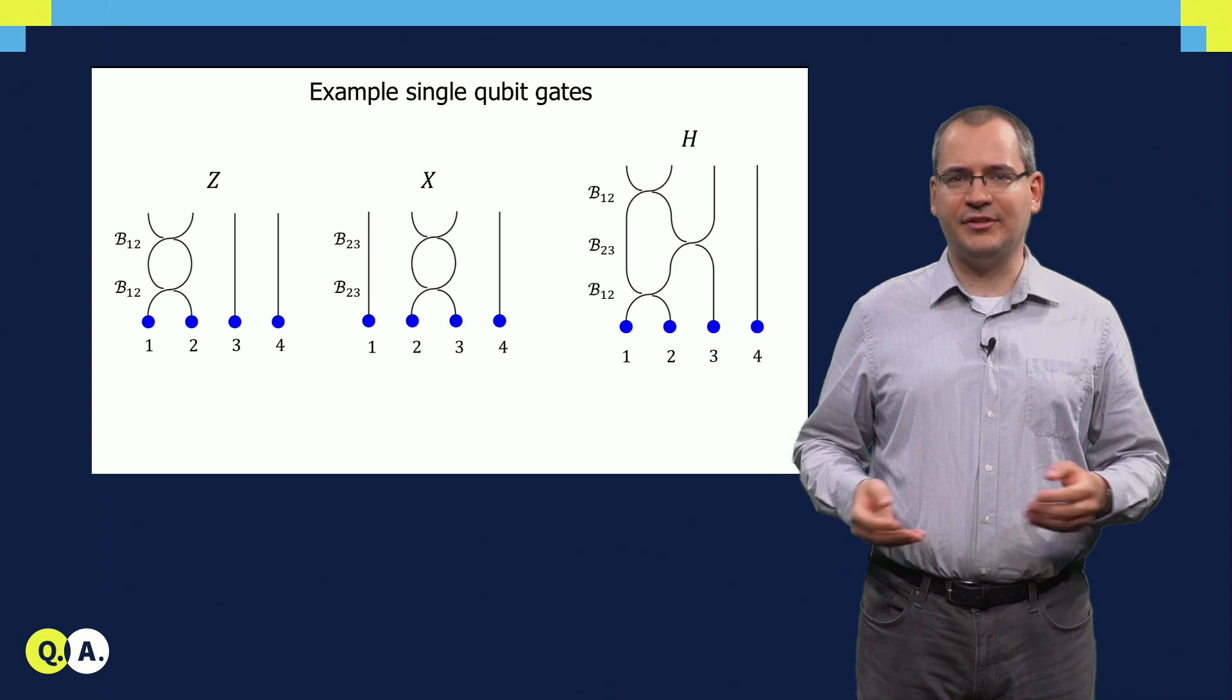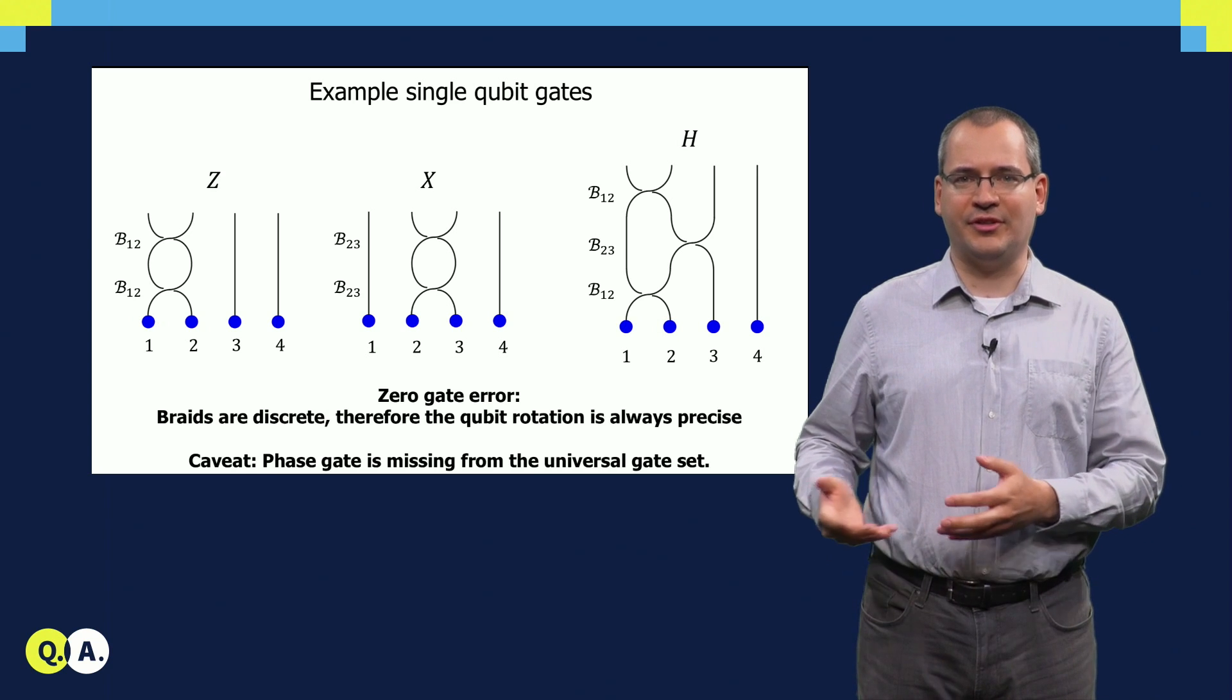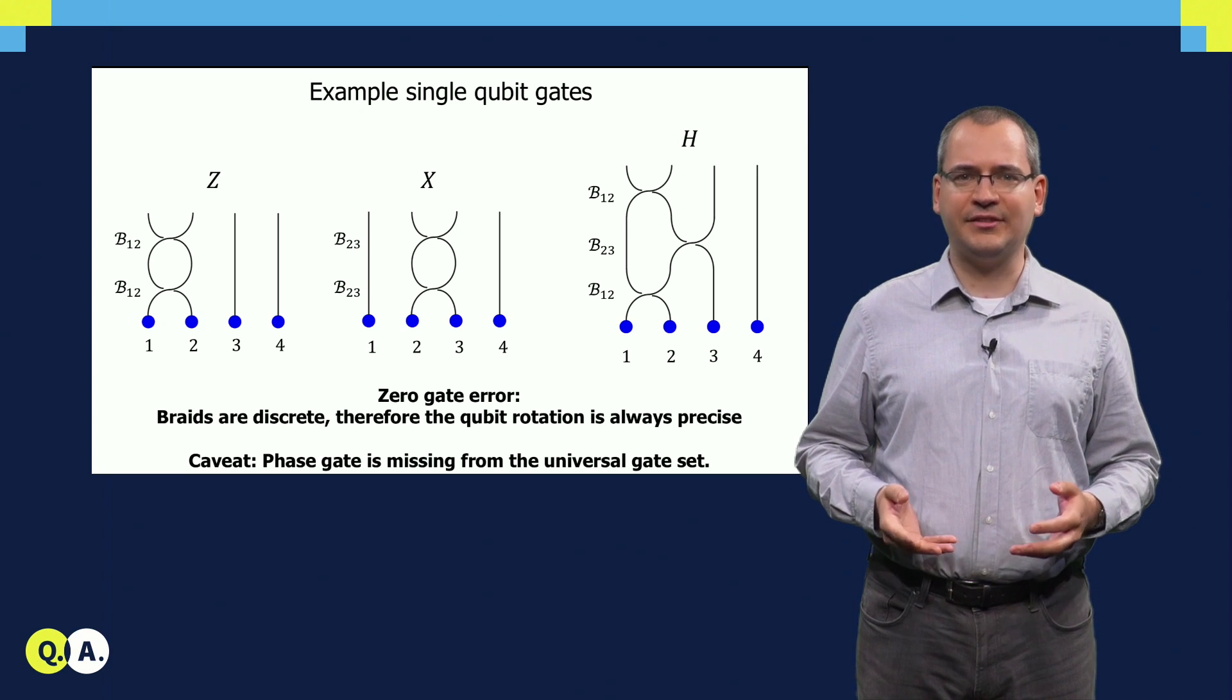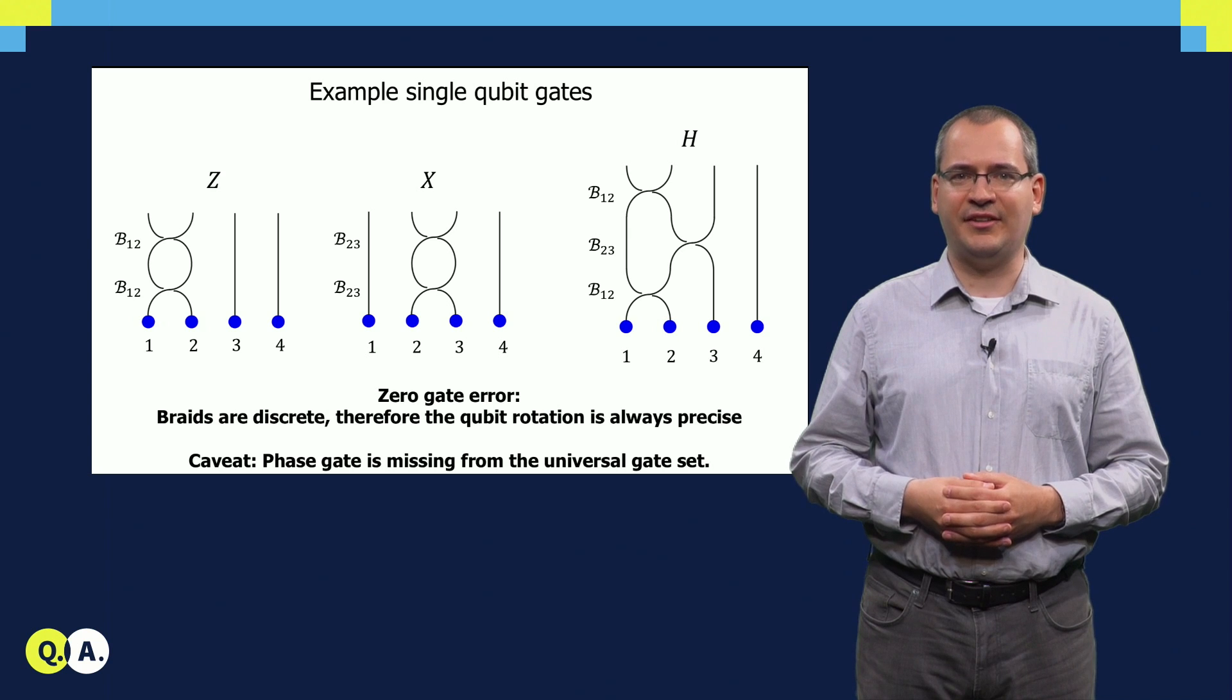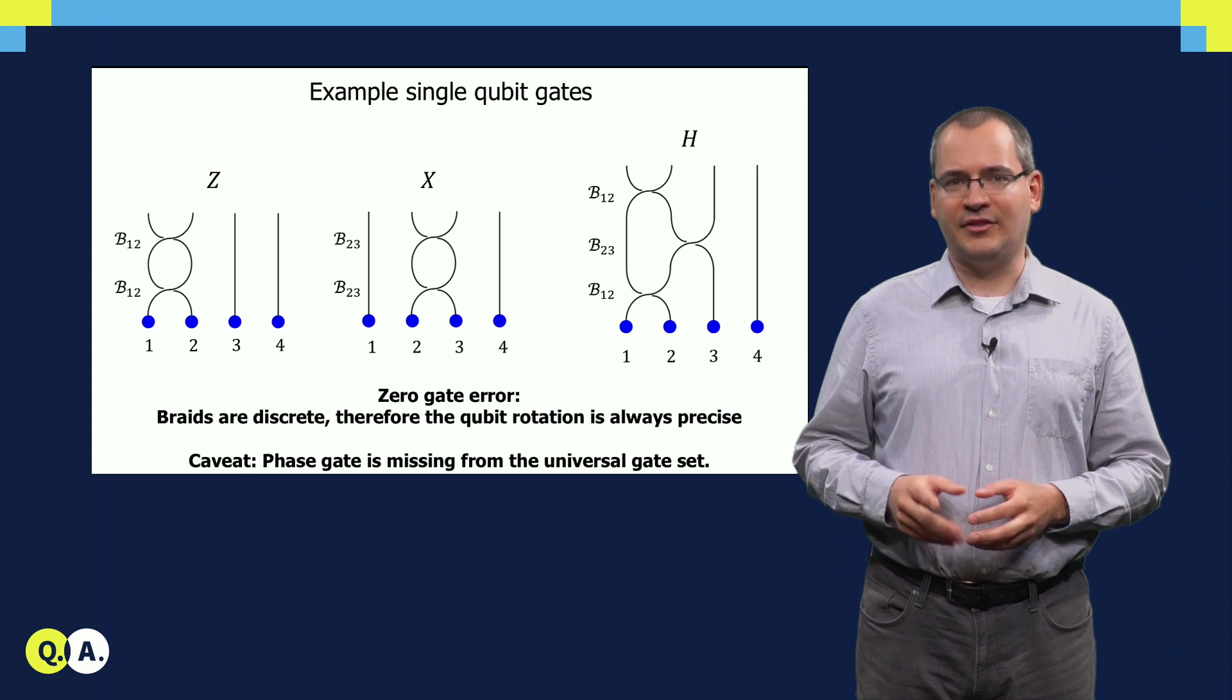It is important that these braiding operations are always discrete. They either happen or don't happen. As a result, the quantum gates that we create here are always perfect. Their fidelity is 100%.